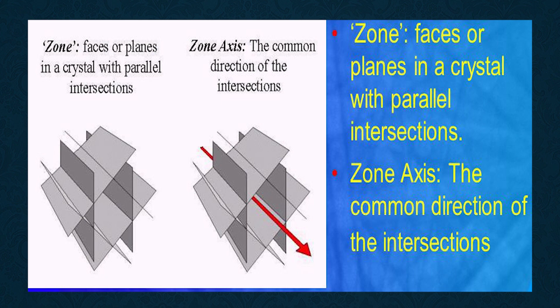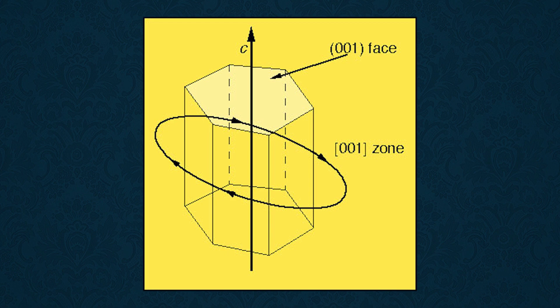A zone axis is always normal to a plane on which the poles of the faces of a zone lie. This plane is called the zonal plane. A circle drawn on the zonal plane with the point of origin as the center is a zone circle. The zone circles may be vertical, horizontal, or oblique.